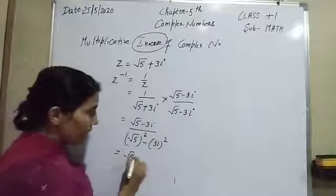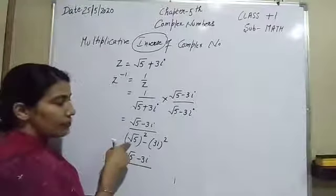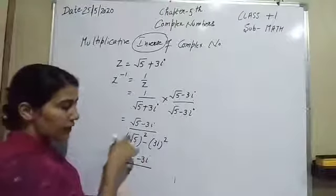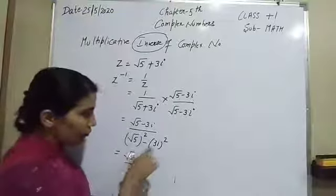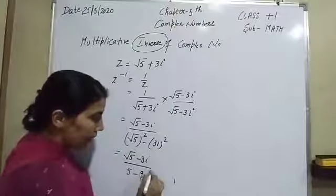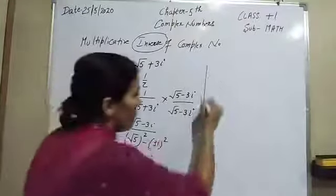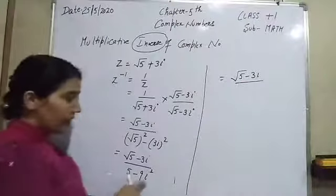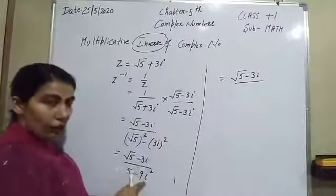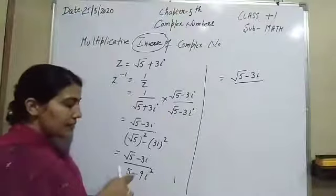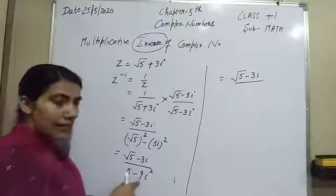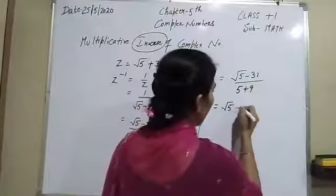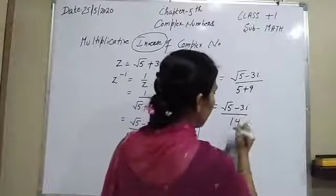So we have root 5 minus 3 eta in the numerator. In the denominator: root 5 squared is only 5 because the root and square cancel, and 3 squared is 9 with eta squared. The value of eta squared is minus 1, so minus minus becomes plus 9. So 5 plus 9 gives 14.